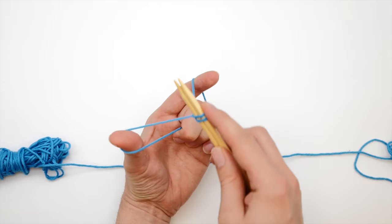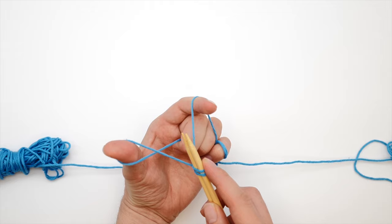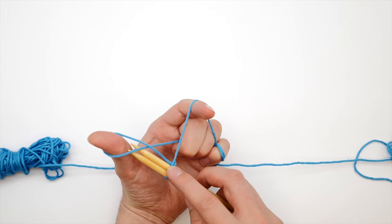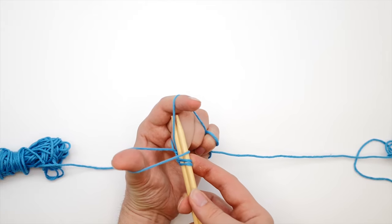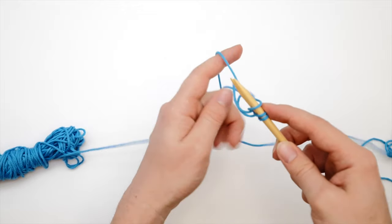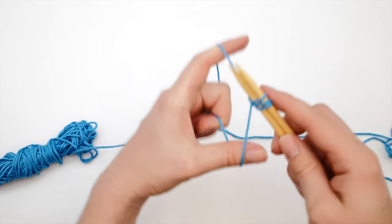Again, pull the needles towards you. Insert the needles into the loop around your thumb from below. Grab the yarn from above. Pull it through. Let loose of the loop. Tighten up. Three stitches.